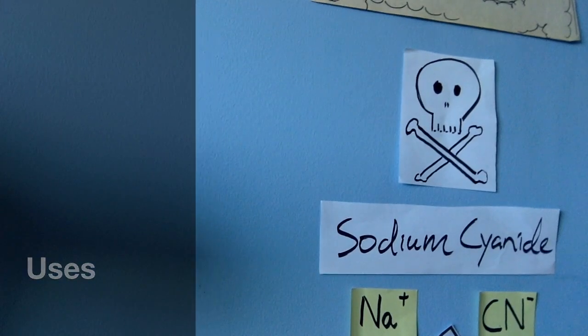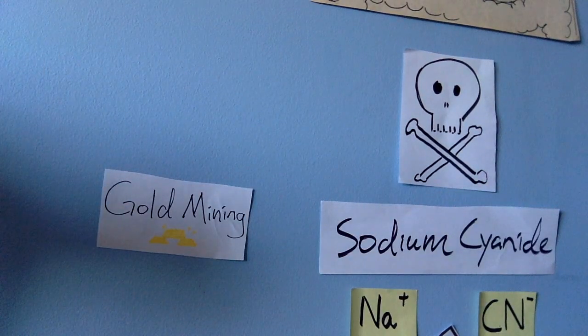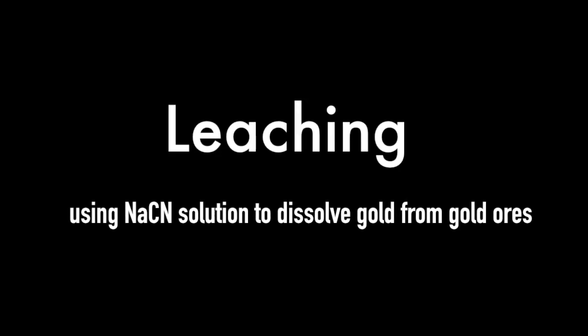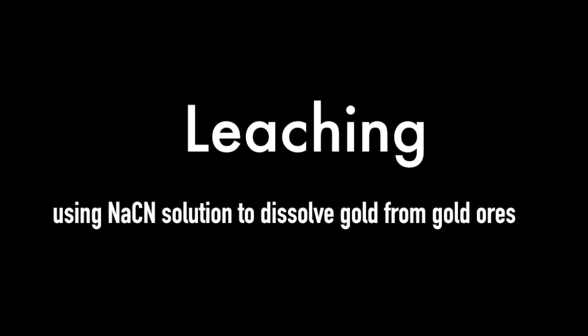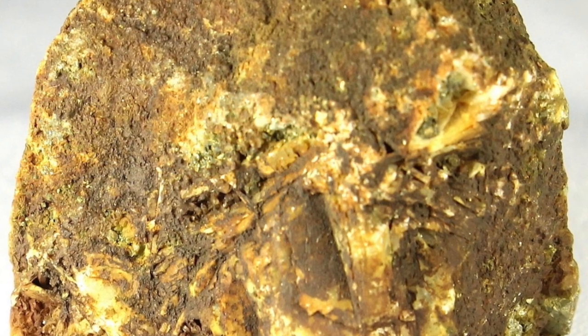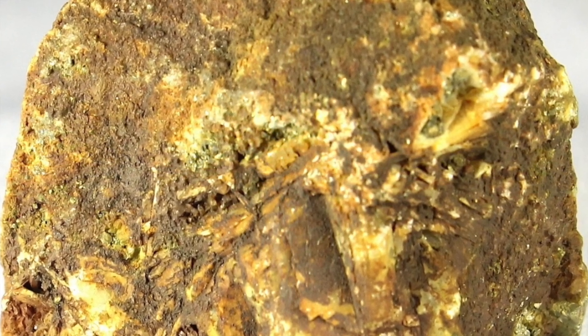The main use of sodium cyanide is to mine gold. Its solution can dissolve gold from gold ores in a process called leaching. Most gold can be found as powders in rocks such as this one.